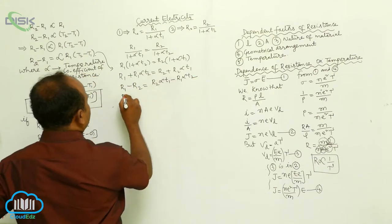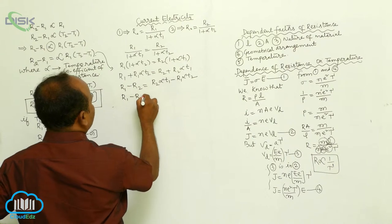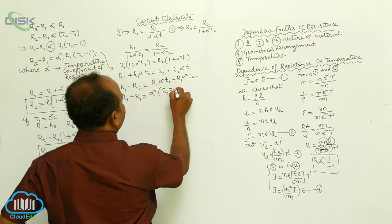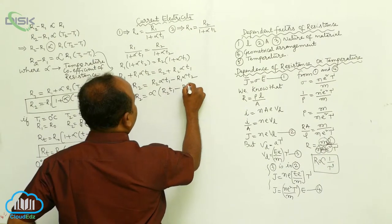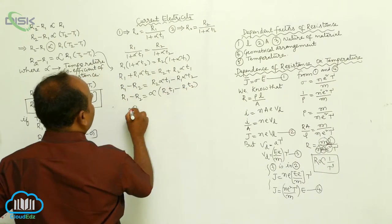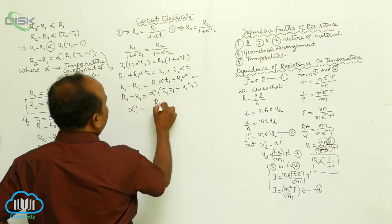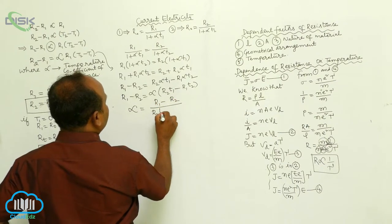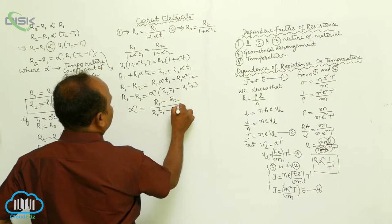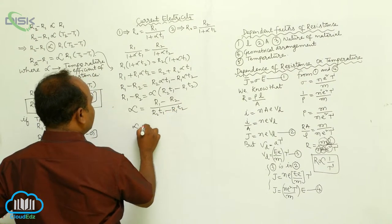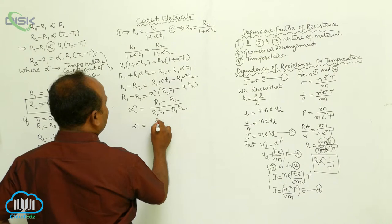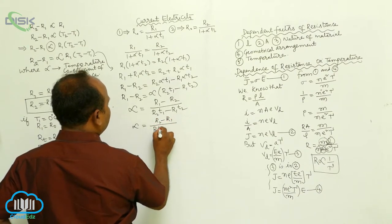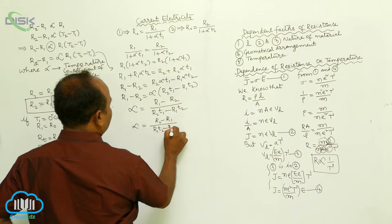Now, R1 minus R2 is equals to R2 alpha T1 minus R1 alpha T2. Taking alpha common, R1 minus R2 equals alpha into R2 T1 minus R1 T2. Therefore, alpha is equals to R1 minus R2 by R2 T1 minus R1 T2.